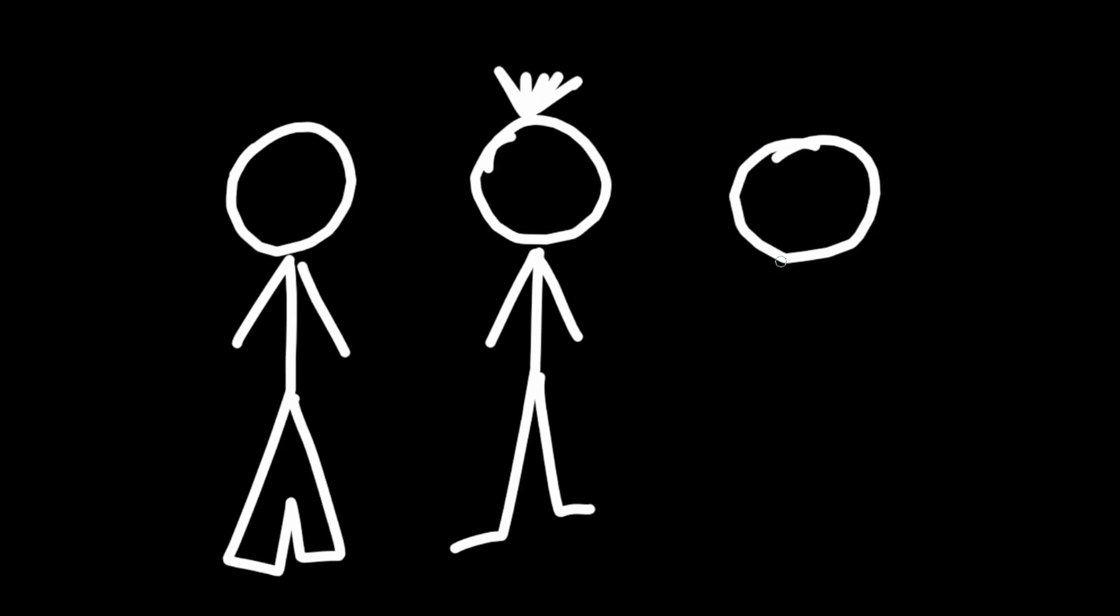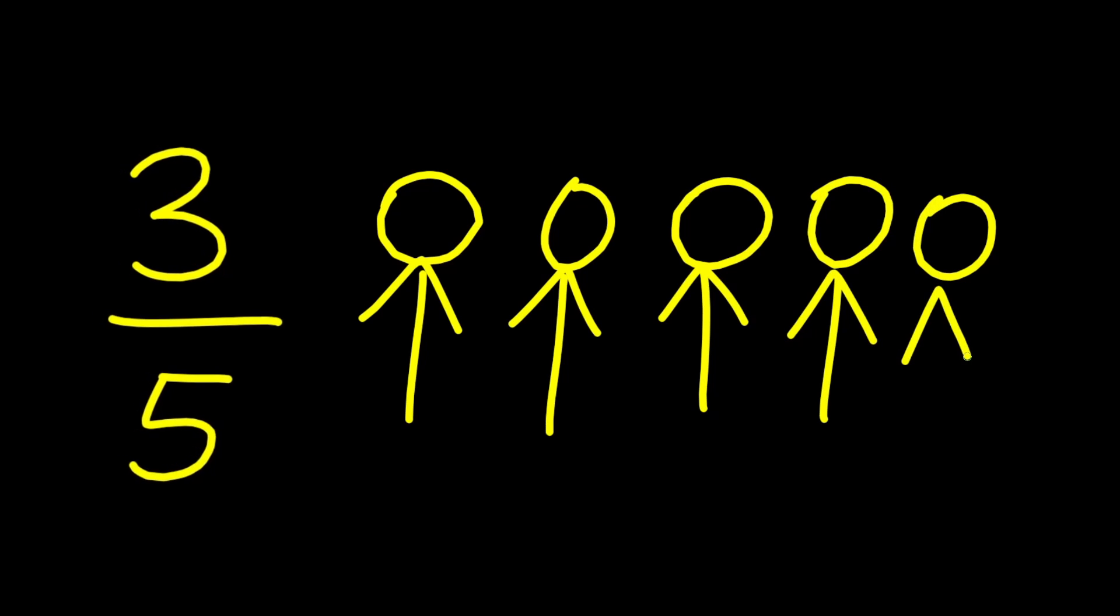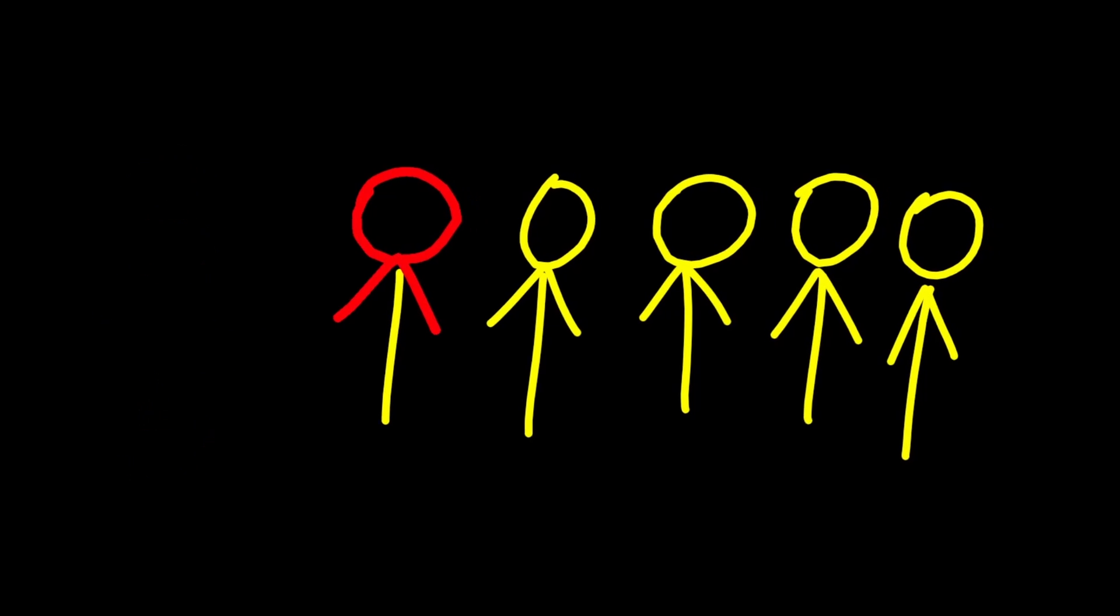We use positive integers to count things like a number of people. We use fractions, like 3 over 5, to talk about part of a thing. For example, we could see that 3 over 5 of a crowd of 5 people equals 3 people.